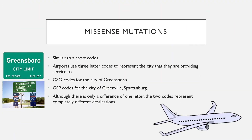A good analogy for missense mutations is airport codes. Airports use 3-letter codes to represent the cities that they are flying to. If you are wanting to fly to Greensboro, North Carolina, you should show up at the gate that says GSO. If you show up at the gate that says GSP, you will be taken to Greenville, South Carolina. Although there is only a difference of one letter between the two codes, you will be taken to completely different cities. In the same sense, missense mutations only involve the exchange of a single nucleotide letter in a codon. Although minimal, it will code for an entirely different amino acid.